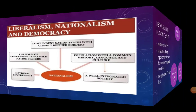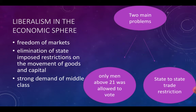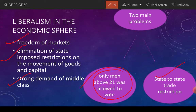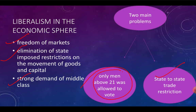Regarding liberalism in economics: liberals wanted the market to be free — not under the control of one or two individuals — completely free. All restrictions on the movement of goods and capital across states should be eliminated. This was the strongest demand of the middle class. But there were two main problems: there was no universal adult franchise — only persons above 21 could vote — and trade restrictions varied from state to state, so there were no uniform restrictions.